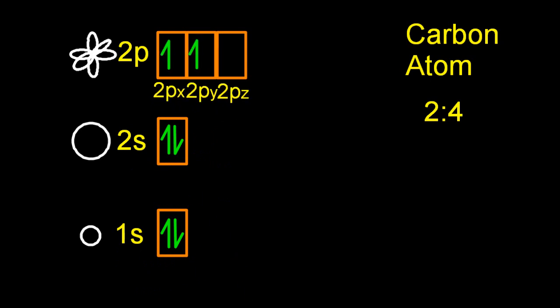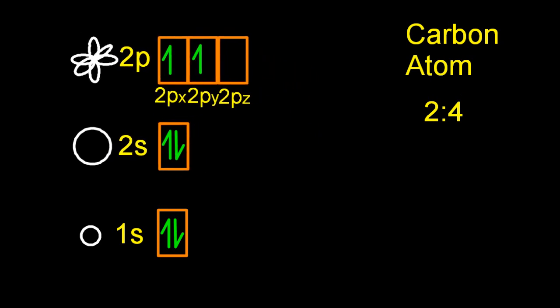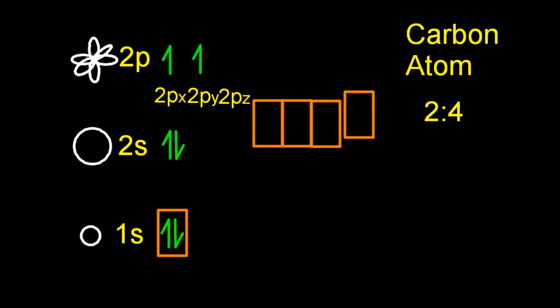So just like a liger is a hybrid of a lion and a tiger, and a z-donk is a hybrid of a zebra and a donkey, we are going to be looking at these orbitals mixing up and hybridizing together. So I'm going to take the 2s and those three 2p orbitals, and they're going to blend themselves together, hybridize.